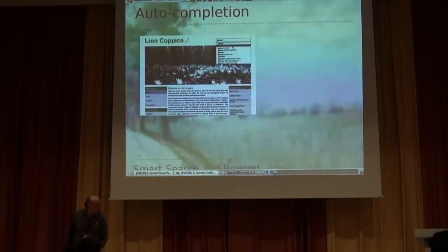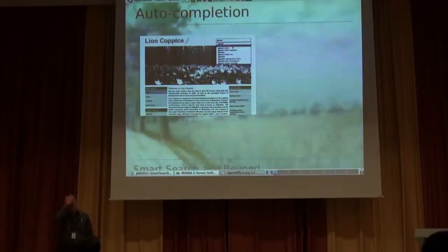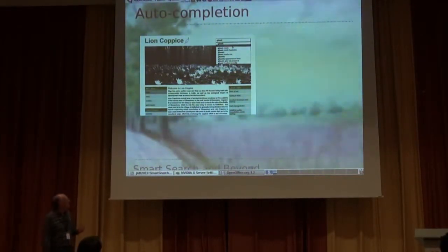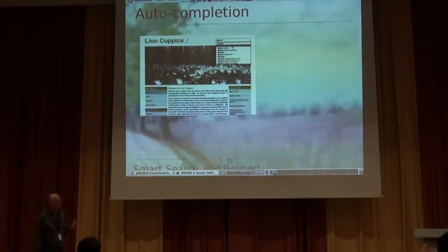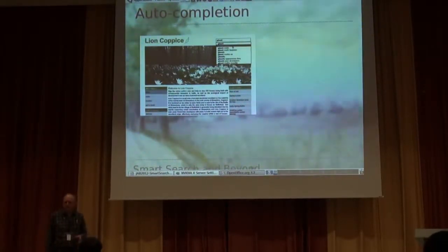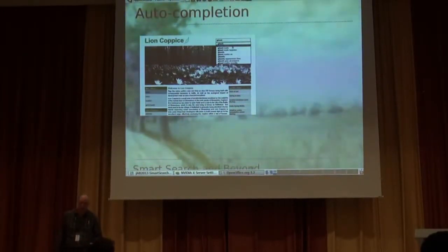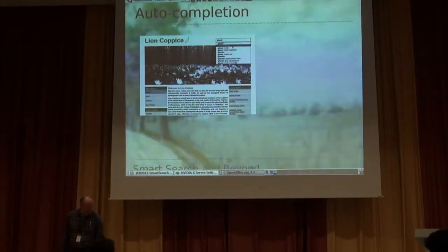Let's have a look at one or two sites that actually are using Smart Search. This is just a little site, and this is pretty much the first sort of thing that you'll notice — that you get auto-suggestion on the search queries. Actually, this isn't a Smart Search on 2.5 site; this is actually a Finder on 1.5. I've only just started deploying 2.5 sites, so I don't have too many examples of Smart Search actually running. But if this were a 2.5 site, it would look exactly the same — the functionality is exactly the same.